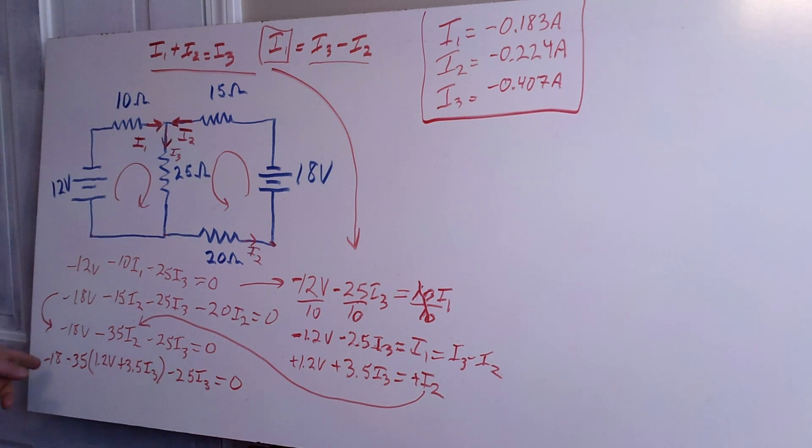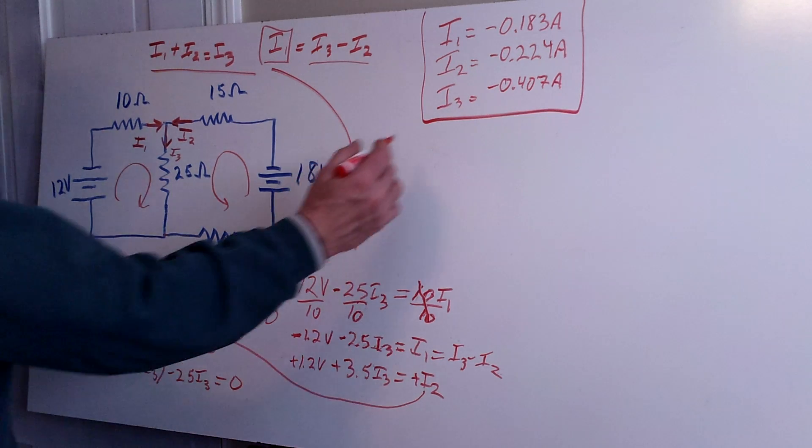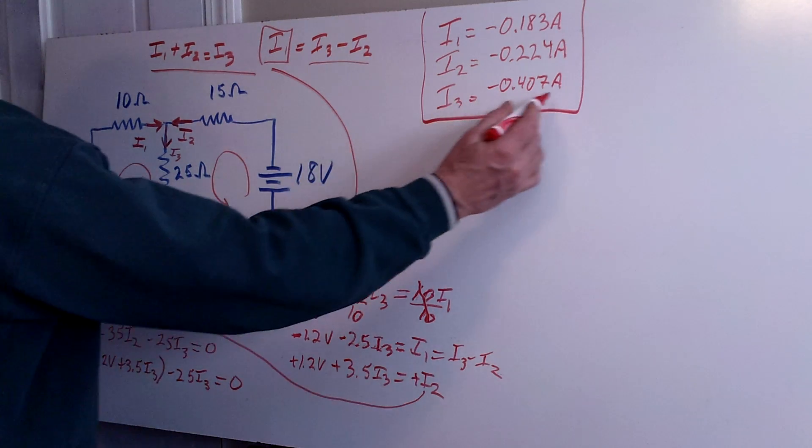Okay, so then I go ahead and I finish solving all of these. And I have now just one equation with I3 in it. And that's the only variable. So when I multiply the rest of this out and solve for I3, then I end up getting the equation I3 is negative 0.407 amps.